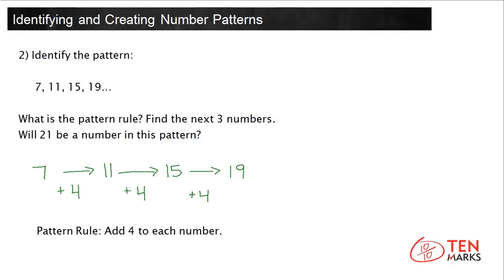To find the next three numbers, continue applying the rule. Add 4 to 19. 19 plus 4 is 23. 23 plus 4 is 27. 27 plus 4 is 31.